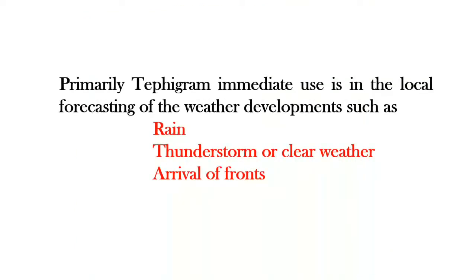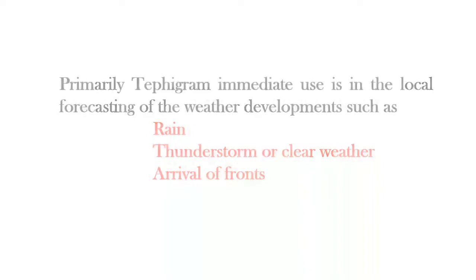The primary immediate use of the tephigram is in local forecasting of weather developments such as rain, thunderstorm or clear weather, and the arrival of fronts. In the next video we will see how the tephigram is used to solve meteorological problems. Thank you for watching.